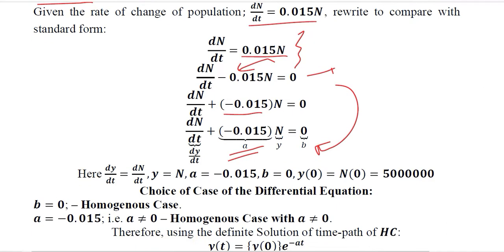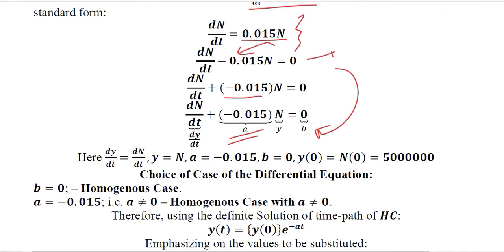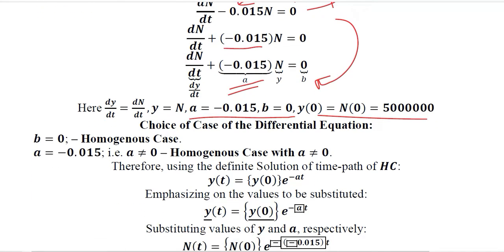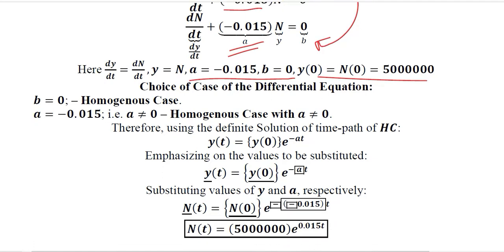Now we are in a position where we can use the values of a and b and the initial condition to find out the kind of case we are dealing with. Since the value of b is 0, it is a homogeneous case, and the value of a is negative, which means a is a non-zero value.